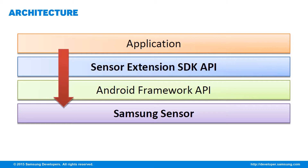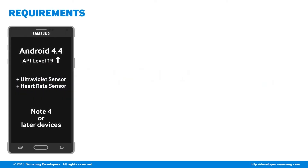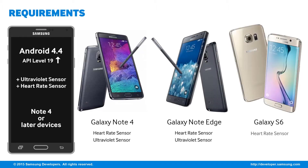Before we set up the SDK, let's first have a look at the requirements. To use the Sensor Extension SDK, you'll need a device with at least Android 4.4 KitKat or higher. Also, make sure that your device has the ultraviolet or heart rate sensors. The Galaxy S5 is no longer supported by the Sensor Extension SDK, but the Galaxy Note 4 and Galaxy Note Edge both have the ultraviolet and heart rate sensors, while the Galaxy S6 only has the heart rate sensor.